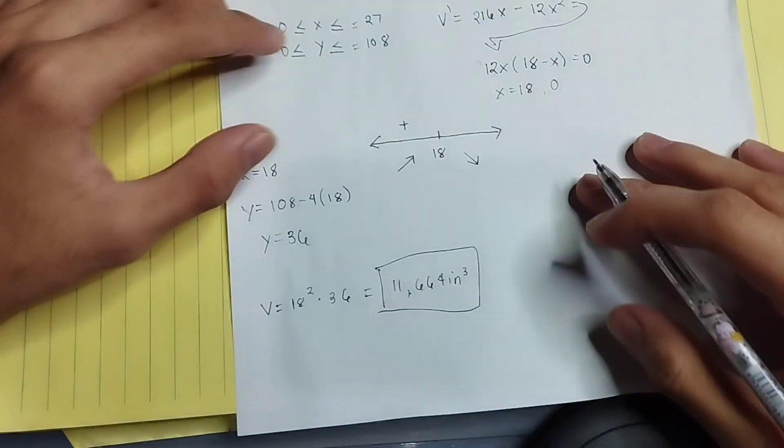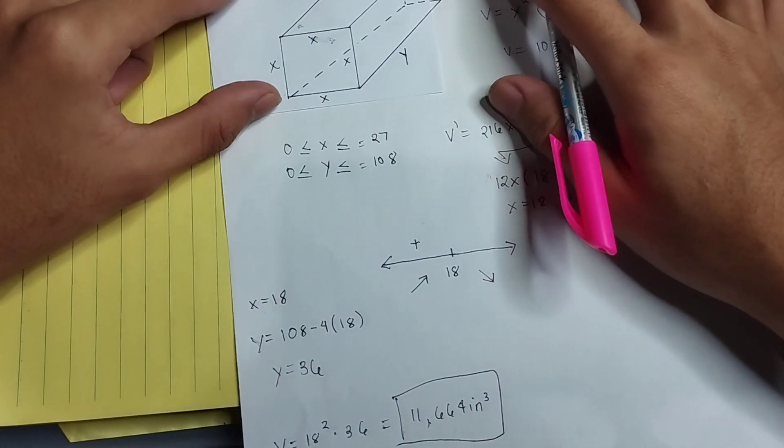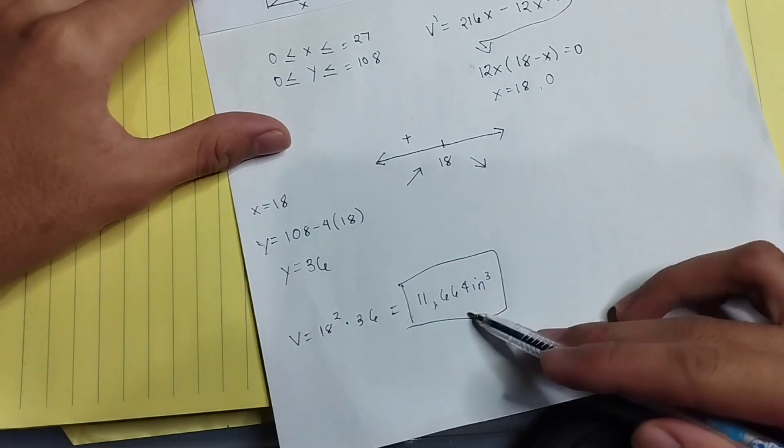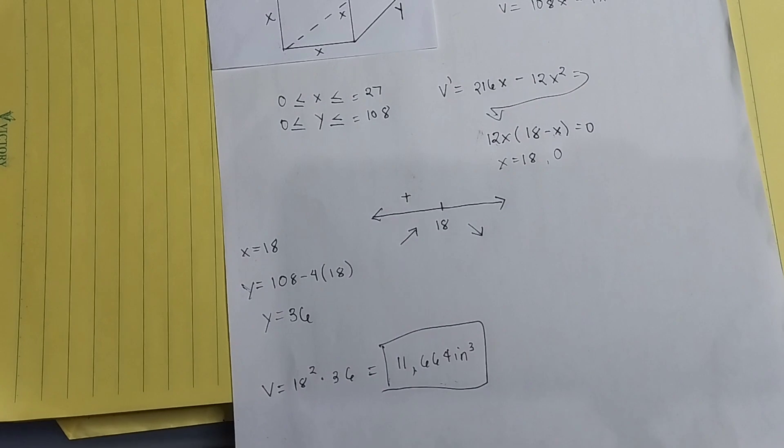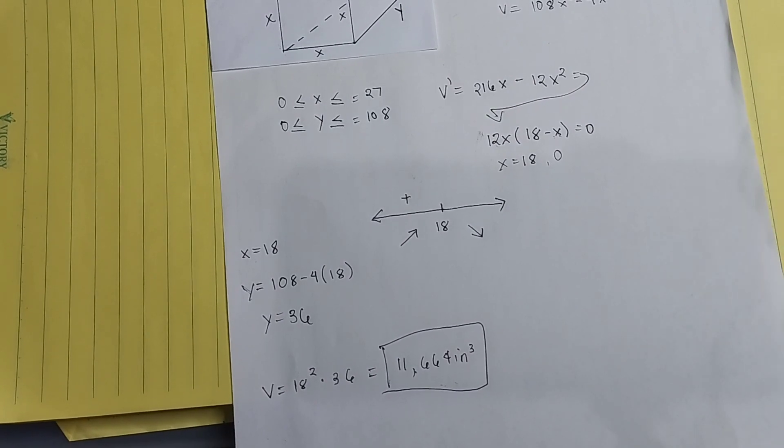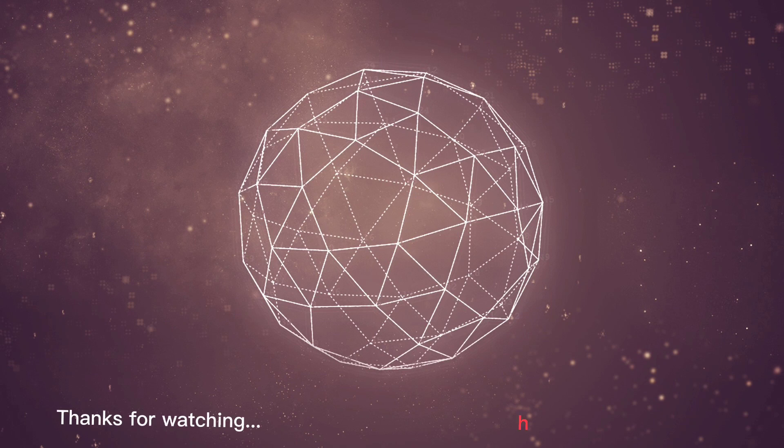And we can say that the maximum volume of the package with square ends that meets this criteria is 11,664 cubic inches. That's all. I hope you understand.